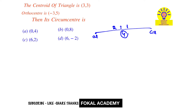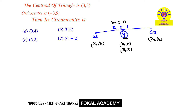Let us assume that the orthocenter is point (x1, y1) and the circumcenter is point (x2, y2). So in the ratio of 2 is to 1, the centroid lies as (x, y), and it is given as (3, 3). Now apply the section formula. So then we get x2, y2. That is, 3, 3 equals...